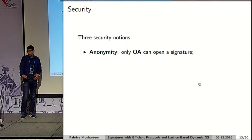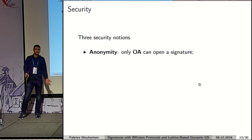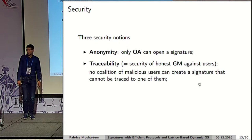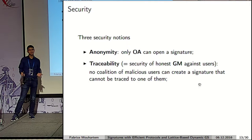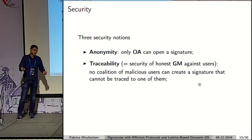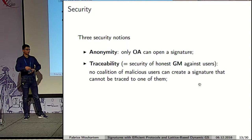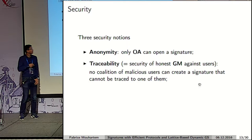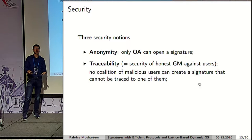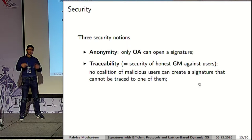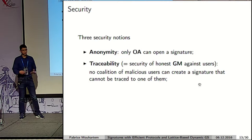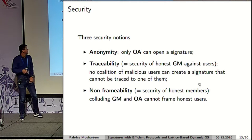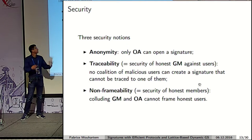The security notions for this protocol are: first, anonymity, which states that without the opening authority's secret, no one can lift the anonymity of a given signature. Second, traceability, which is the security of the authorities against users who want to escape traceability — no user can forge a signature on behalf of another user or produce a signature that won't open to a valid user. These two notions also exist in the static setting. In the dynamic setting, we additionally need non-frameability, which is the security of honest members against a dishonest authority trying to frame them.